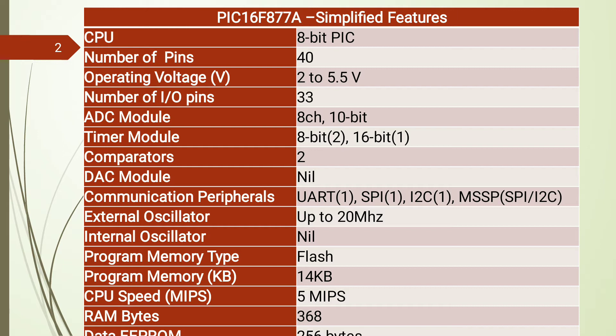The 5 I/O ports are Port A, B, C, D, and E. Port A consists of 6 I/O pins. Ports B, C, and D consist of 8 I/O pins each, and Port E consists of 3 I/O pins.